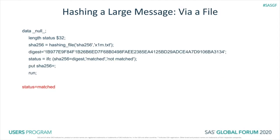What if the data is in a file? Very often people use MD5 or SHA-256 on a set of files to confirm they contain exactly what they're supposed to — especially during a transfer or install. Say we have a file of 1 million x's named x1m.txt. We can run the hashing_file function, and we should get back the same digest we got in the other examples — and indeed we do. So hashing_file is also available, and you pass the name of a file. There are a couple of caveats I'll cover later about dealing with files.